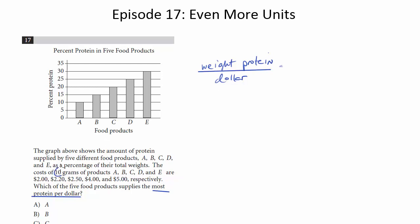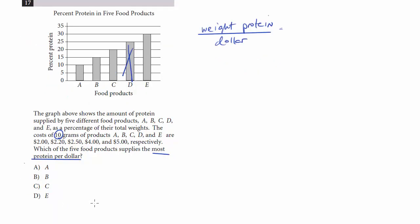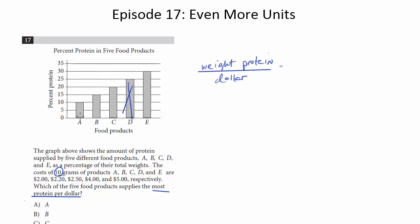So what we need to divide is the mass of the protein for each of these products by their cost. They tell us that 10 grams of each of these products are these prices. This table tells us of those 10 grams what percent is protein. So we can ignore D because if you look at the choices, D isn't an answer. So let's figure out this value for A, B, C, and E and see which one is the highest.